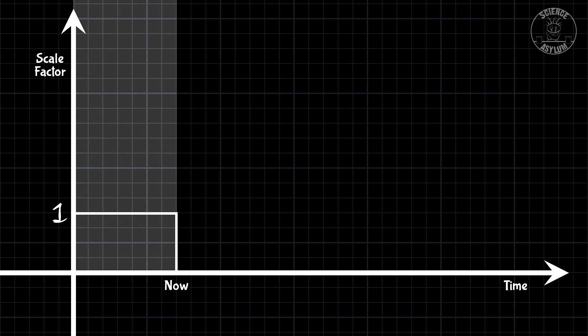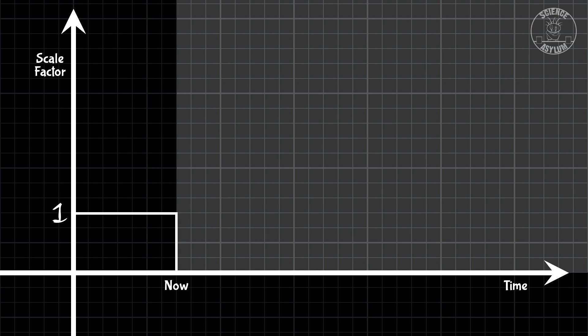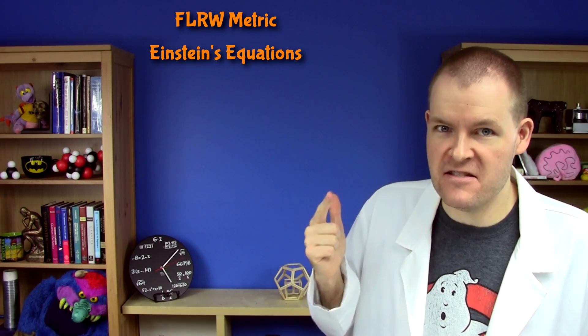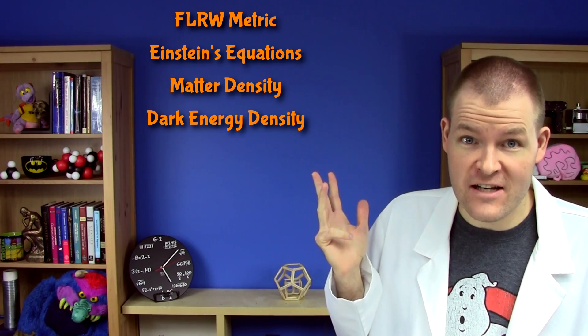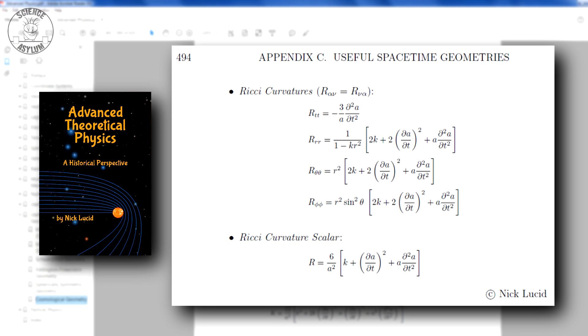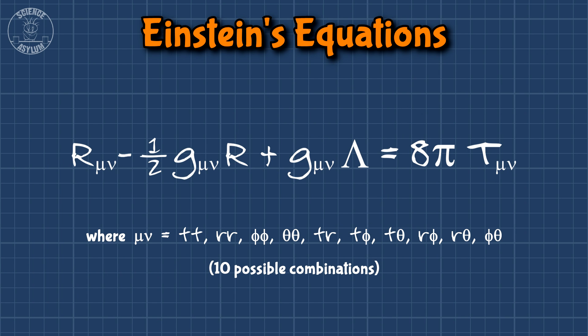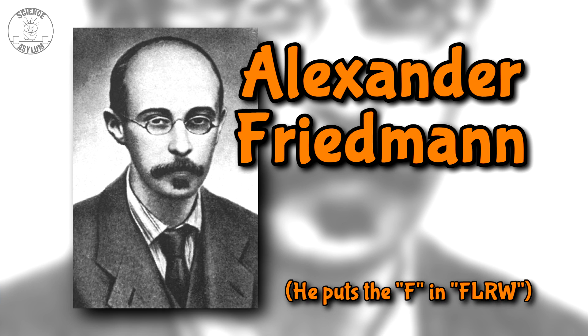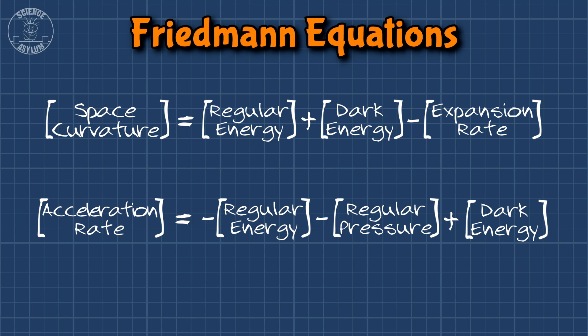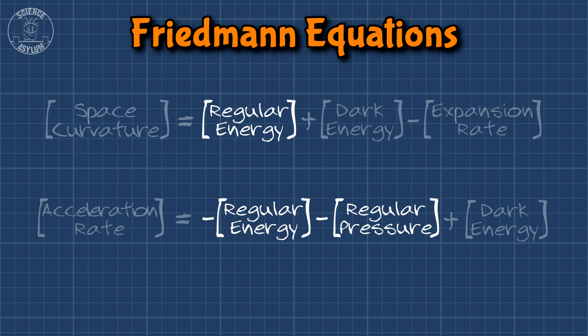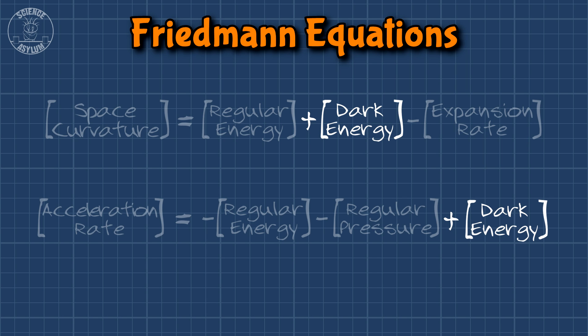To make any kind of prediction about the future, we need a pattern for how that scale factor is changing — we need to know what the past looks like so we can figure out what the future looks like. Here's what we need: the FLRW metric, Einstein's equations — there are technically 10 — matter density (both regular and dark matter), dark energy density, and spatial curvature. If we take what we know from the metric and toss it into Einstein's equations, we get something called the Friedmann equations, named after Russian physicist Alexander Friedmann. Regular matter adds to the curvature of space and slows down the expansion. Dark energy also adds to the curvature of space, but speeds up the expansion.